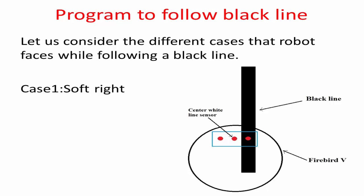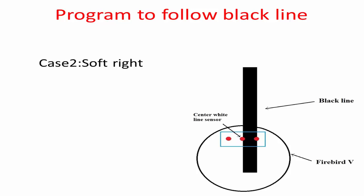Let us consider the different cases the robot faces while following a black line. Case 1: when the black line is below the third line sensor, the robot should be made to turn soft right. Case 2: when the black line is below the second and third line sensors, the robot should also be made to turn soft right.